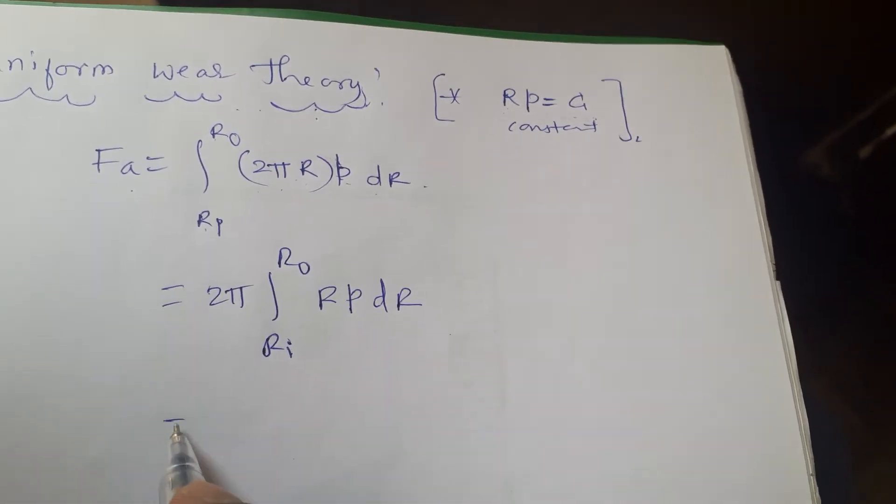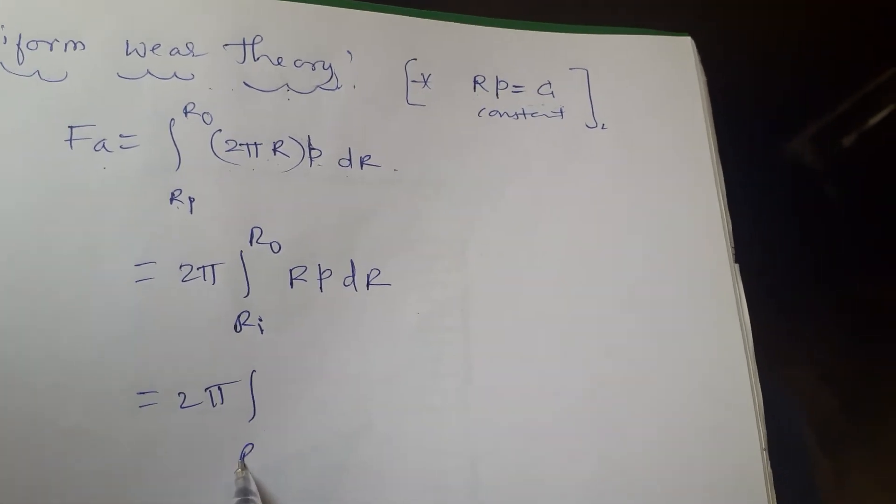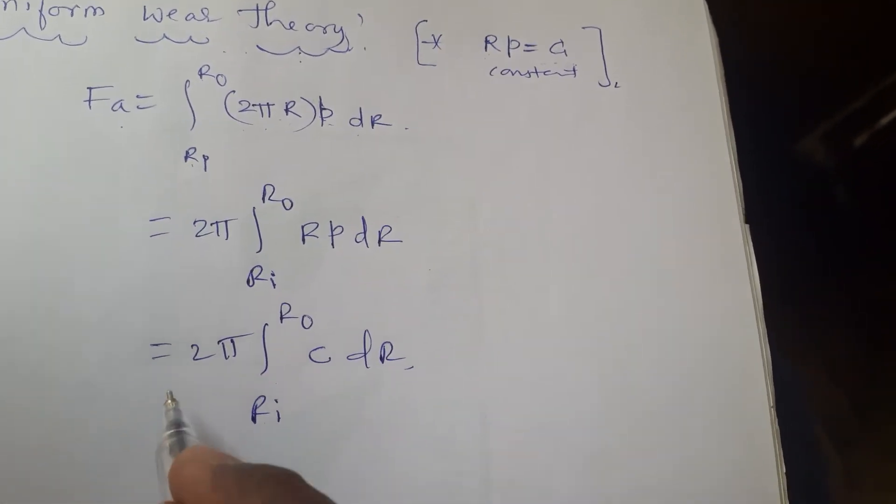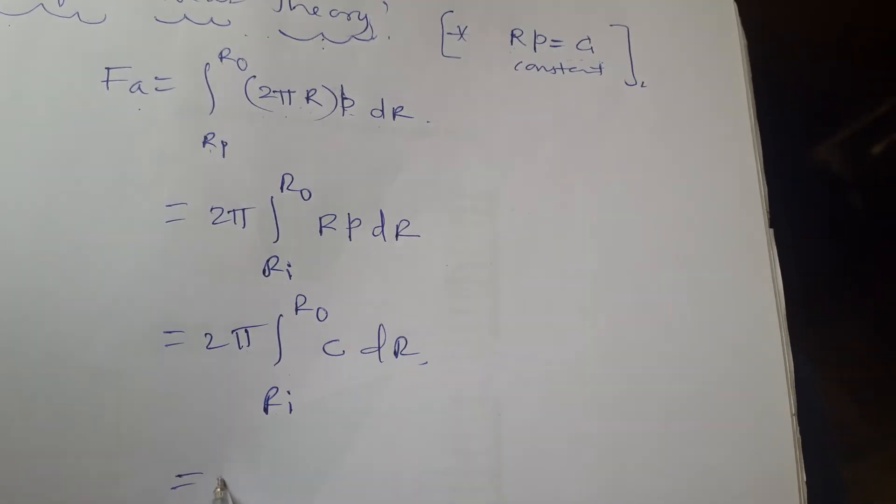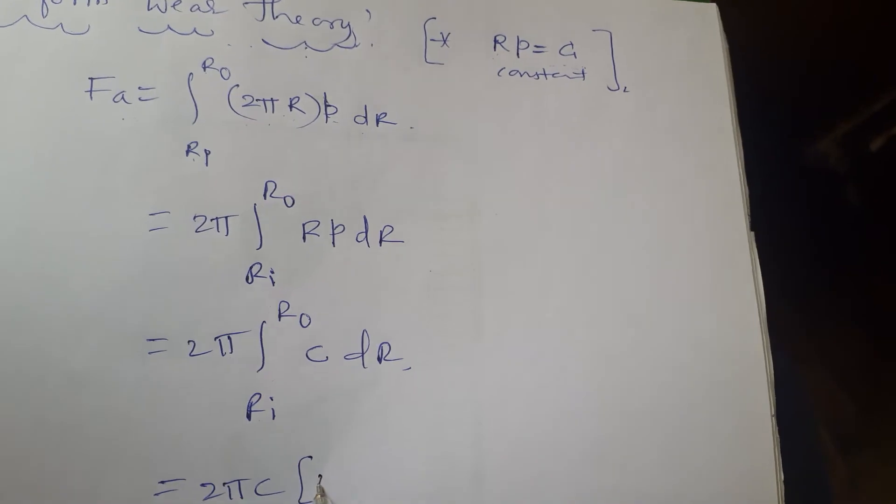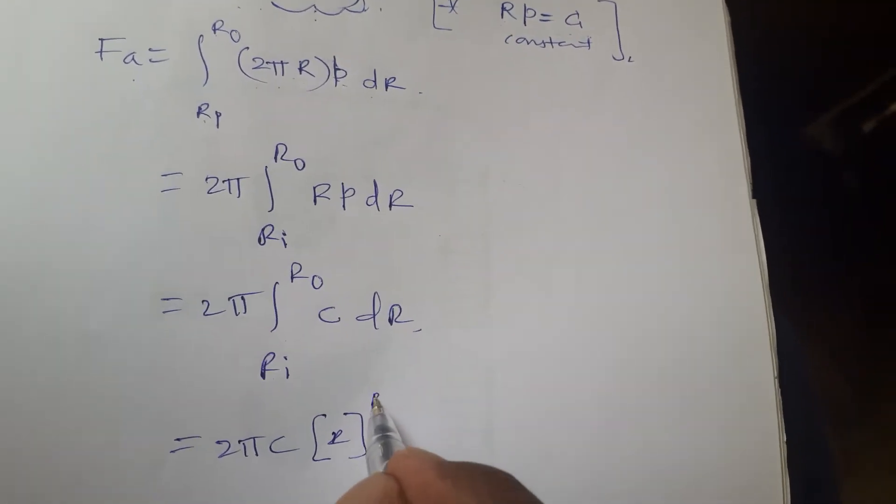This is what C. That is 2 pi Ri, R out, C dr. I will keep. This C is a constant. So can take it out. 2 pi C. When it is constant, integrate. This is a R, Ri, R out.